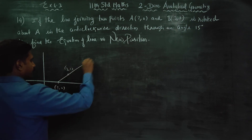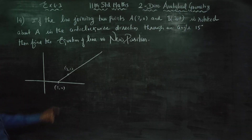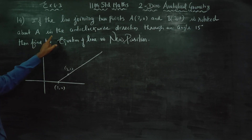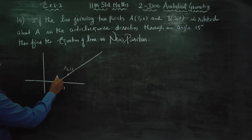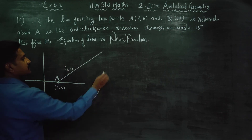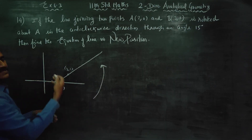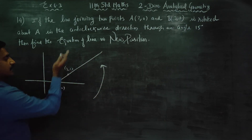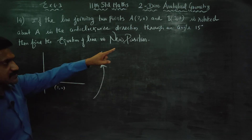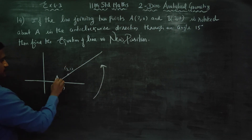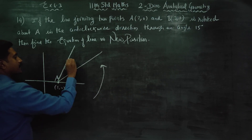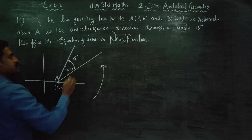The straight line is rotated about A. This is my A point — it will rotate. The anticlockwise direction is opposite to the clock direction. The line will be rotated 15 degrees.